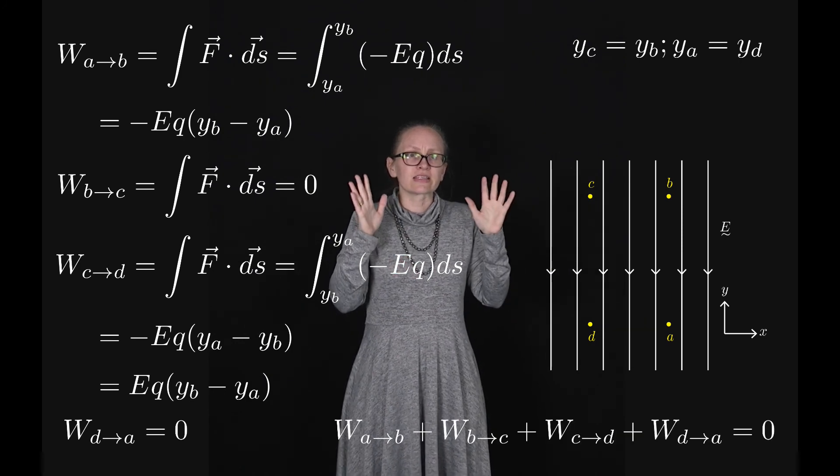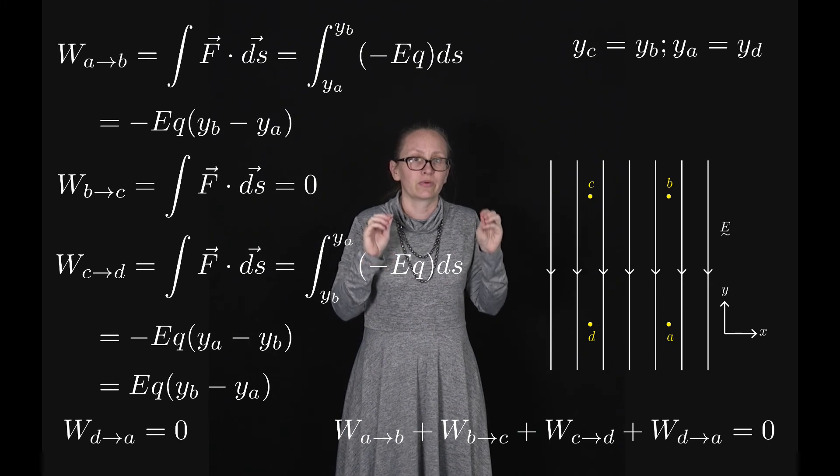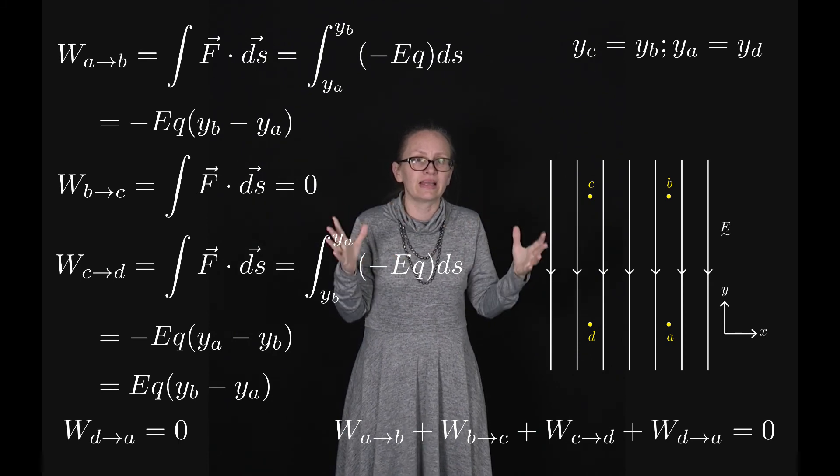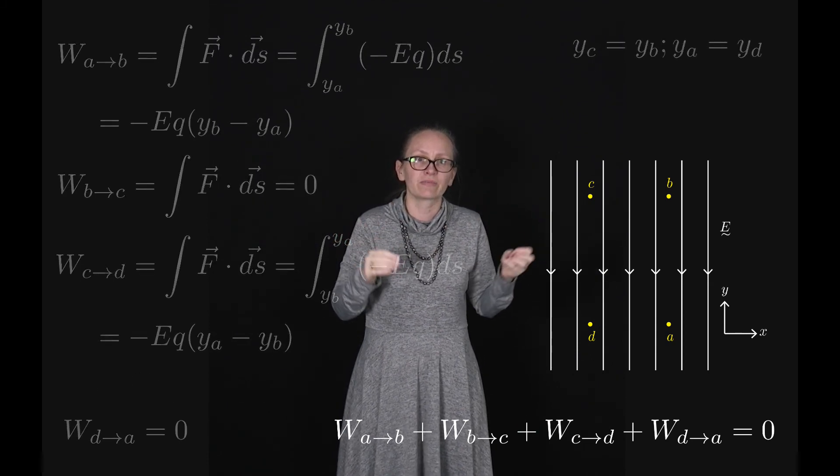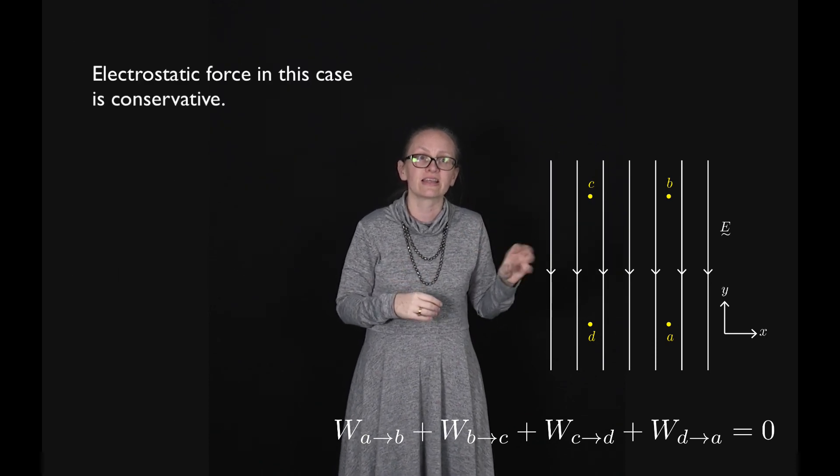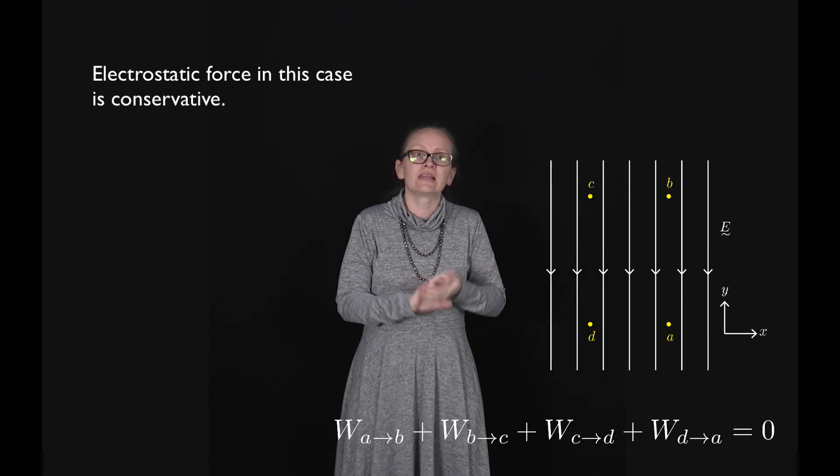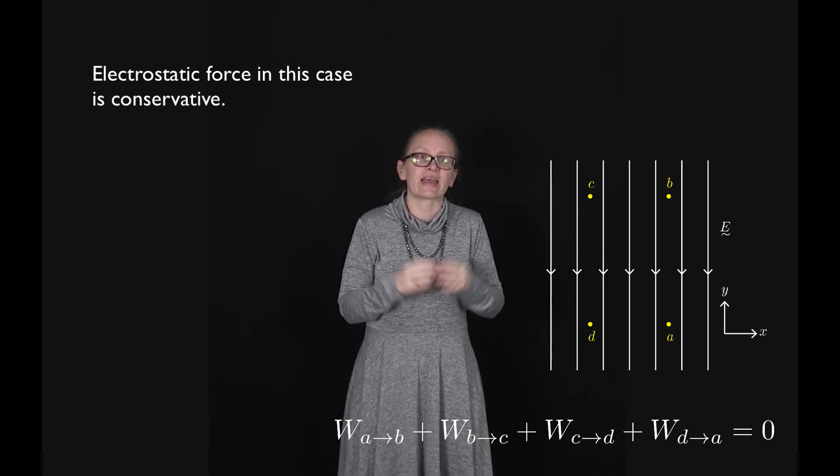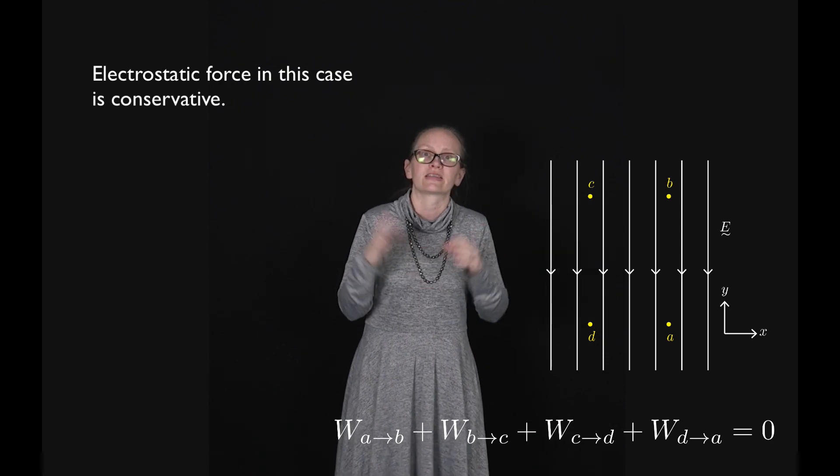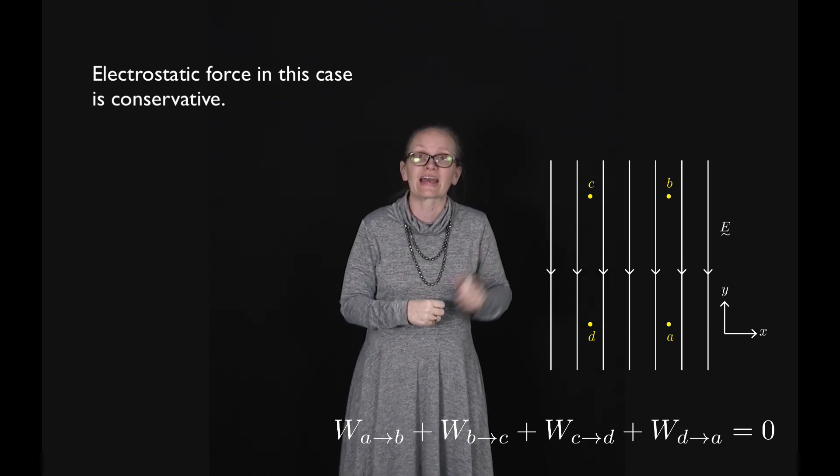So around this closed path the electrostatic work is equal to zero. They completely cancel each other out. So this suggests that the electrostatic force at least in this case is a conservative force. So later we'll look at a radial field and show that the electrostatic force is also conservative in that case.